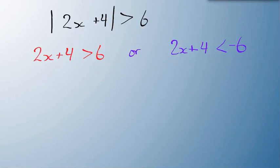So I solve these, each of these separately, and I end up with two different sets of answers. So solving the one on the left here, 2x is greater than 2, divide both sides by 2, x is greater than 1.